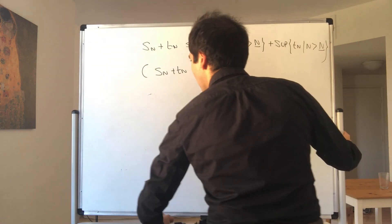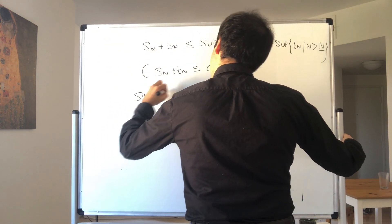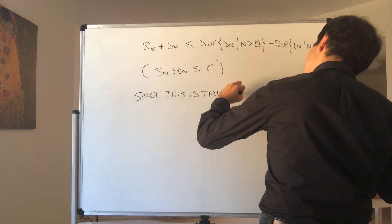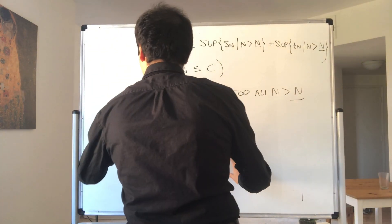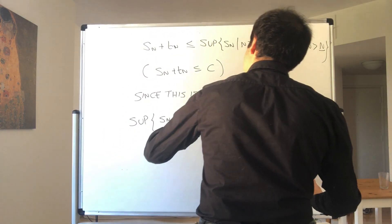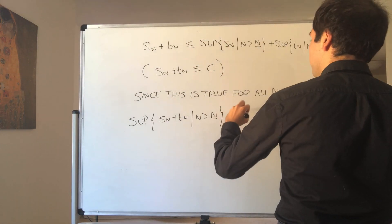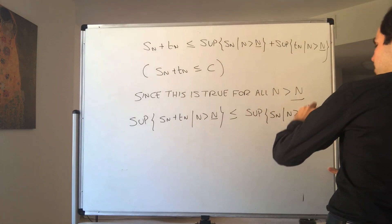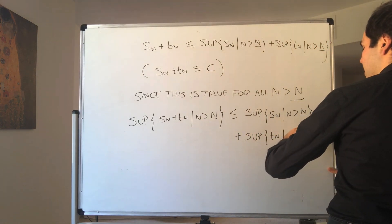Since this is true for all N bigger than capital N, you can just take the sup, and you essentially get that the supremum of Sn plus Tn, where N is bigger than capital N, is less than or equal to the sum of the sups — so sup of Sn where N is bigger than capital N, plus sup of Tn where N is bigger than capital N.